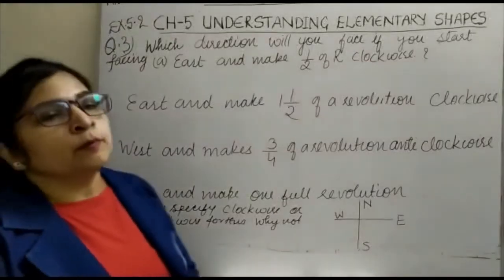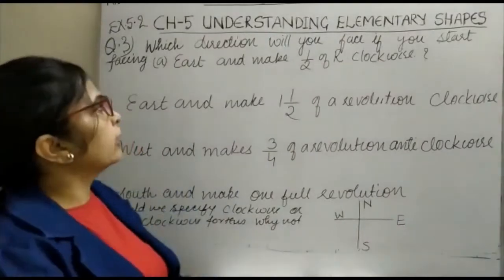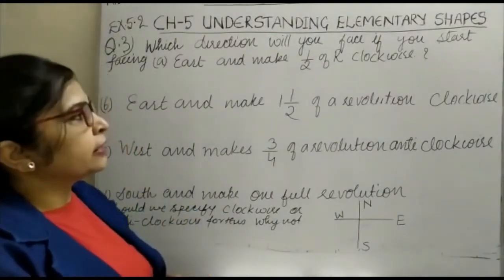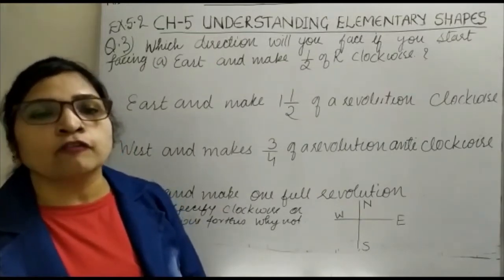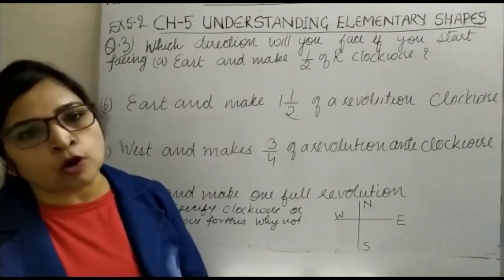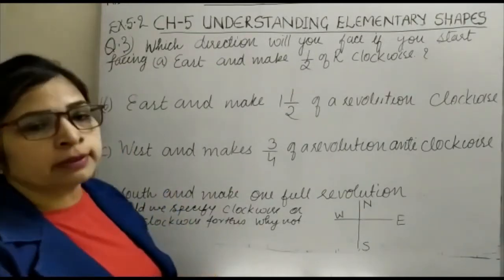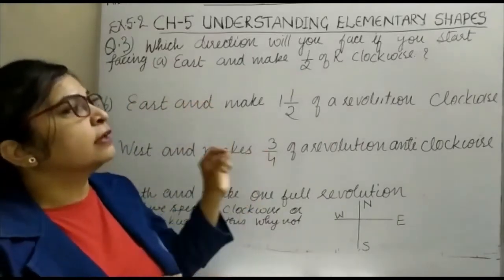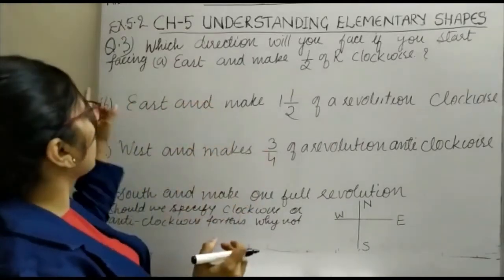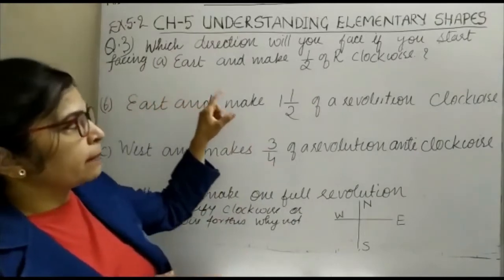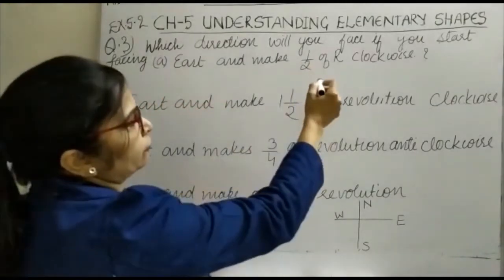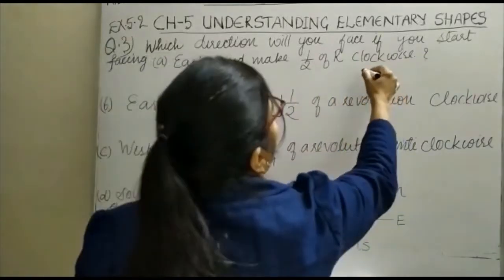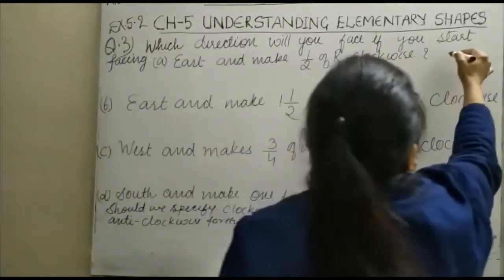Hello everyone, welcome to chapter 5: Understanding Elementary Shapes. Today we will study about the direction of movement — clockwise. In question number 3, it is asked: which direction will you face if you start facing east and make one half, that is half of a revolution, clockwise? You can see here this is our direction diagram.